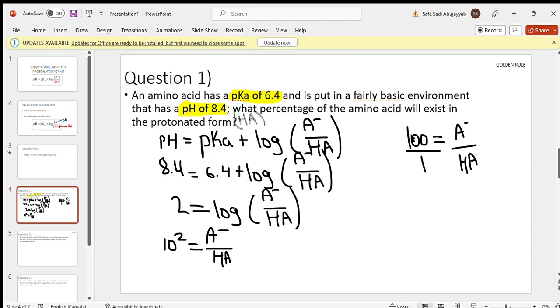We're trying to find what percentage of HA exists. From this equation, we know that we have 100 A minus to every 1 HA. That means we have 1 HA out of the total, which is 100 A minus plus 1 HA. So the HA we have is 1 out of 101, which equals 0.99 percent.